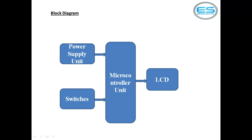The power supply unit requires to convert AC to DC source, as electronic devices require DC power as operating voltage. The power supply unit contains internal blocks: step-down transformer, bridge rectifier, filter, and regulator. All those individual components are required to convert your AC source into DC source.